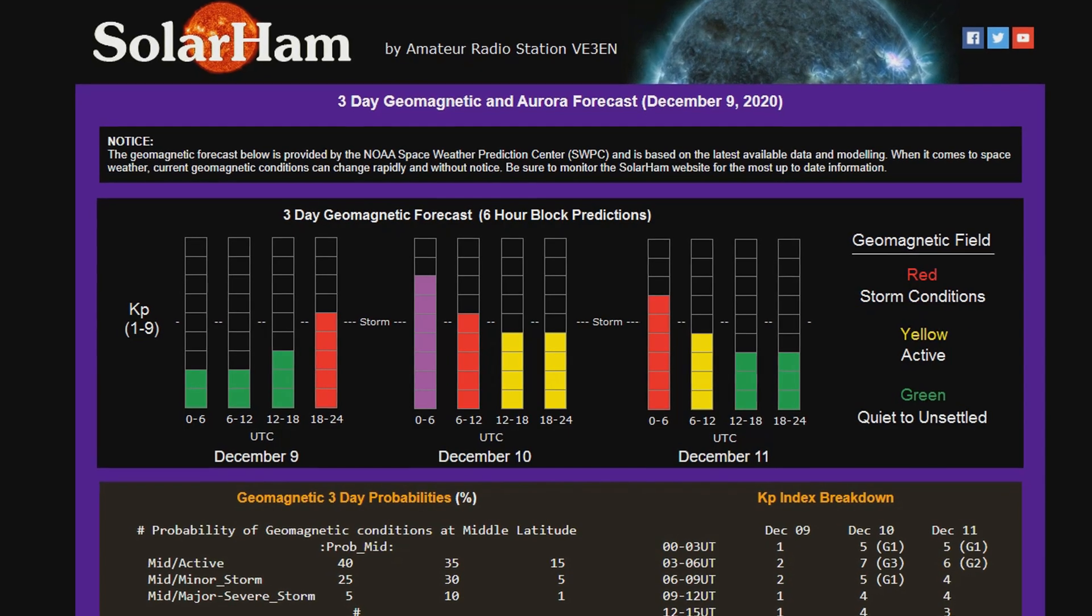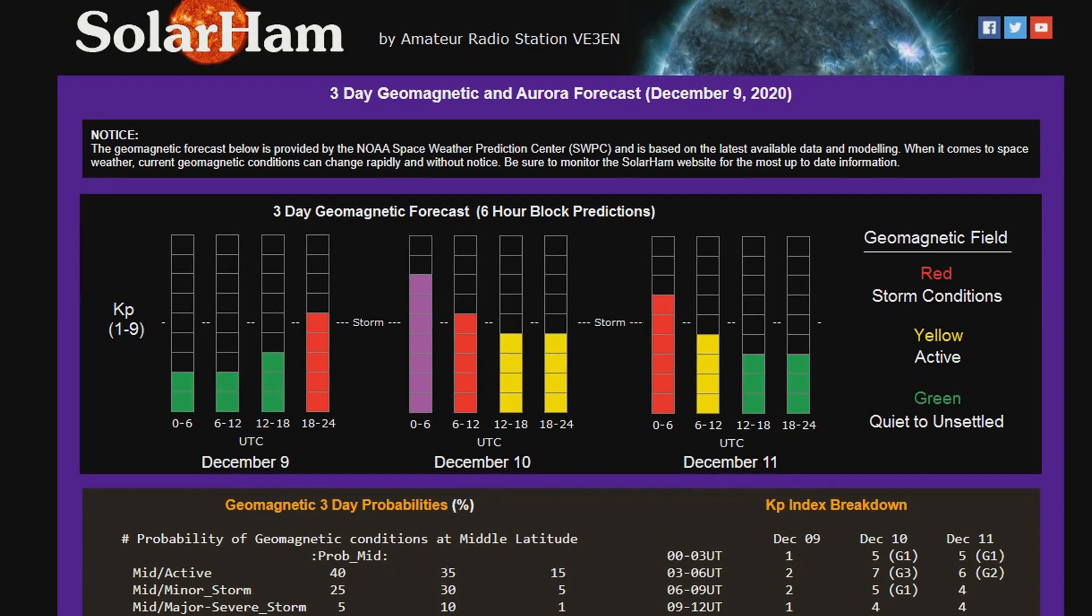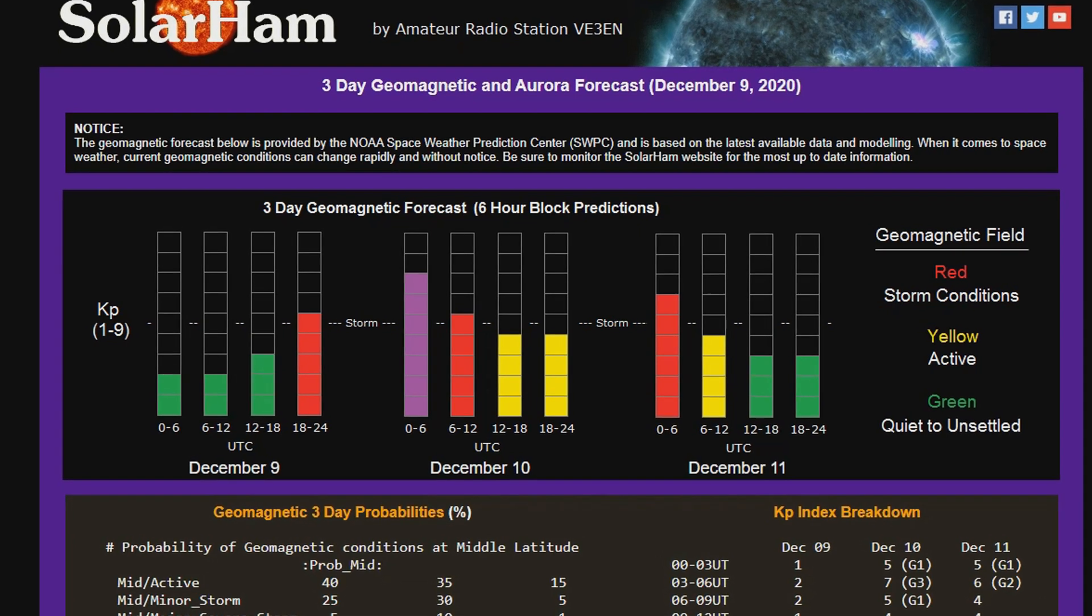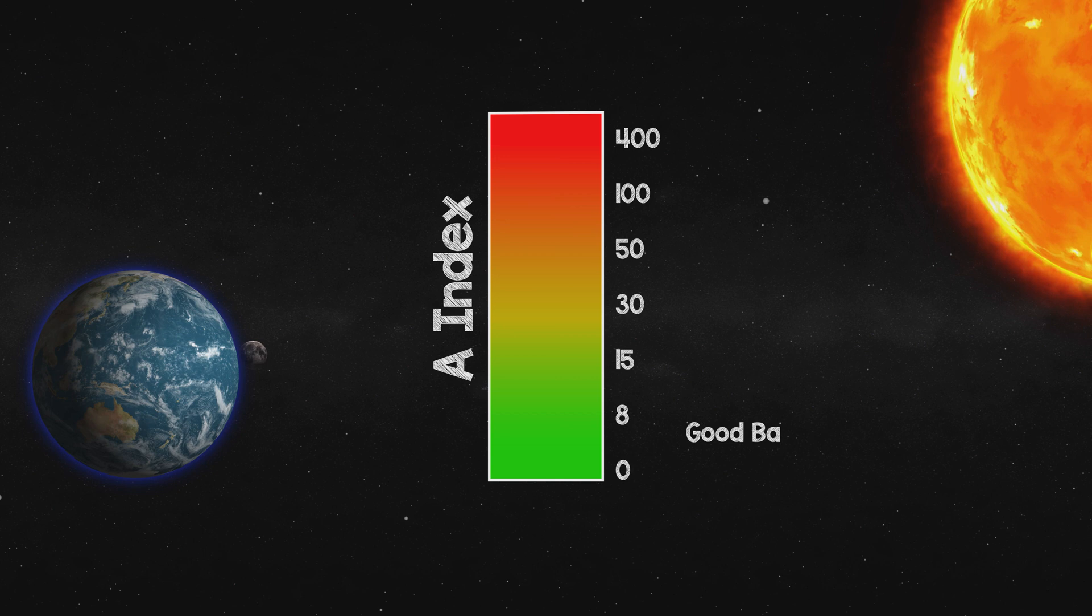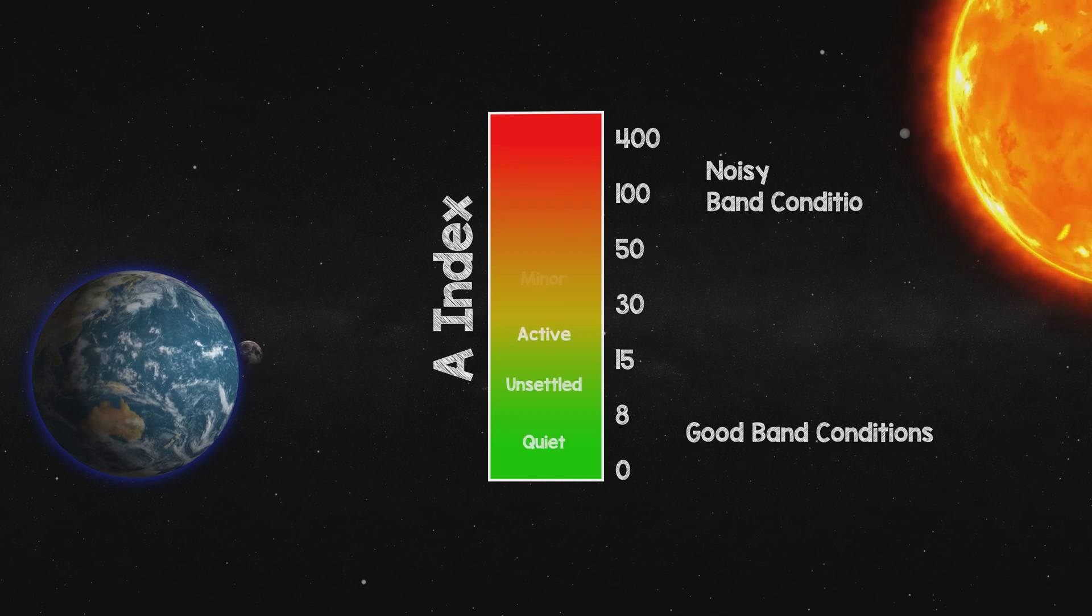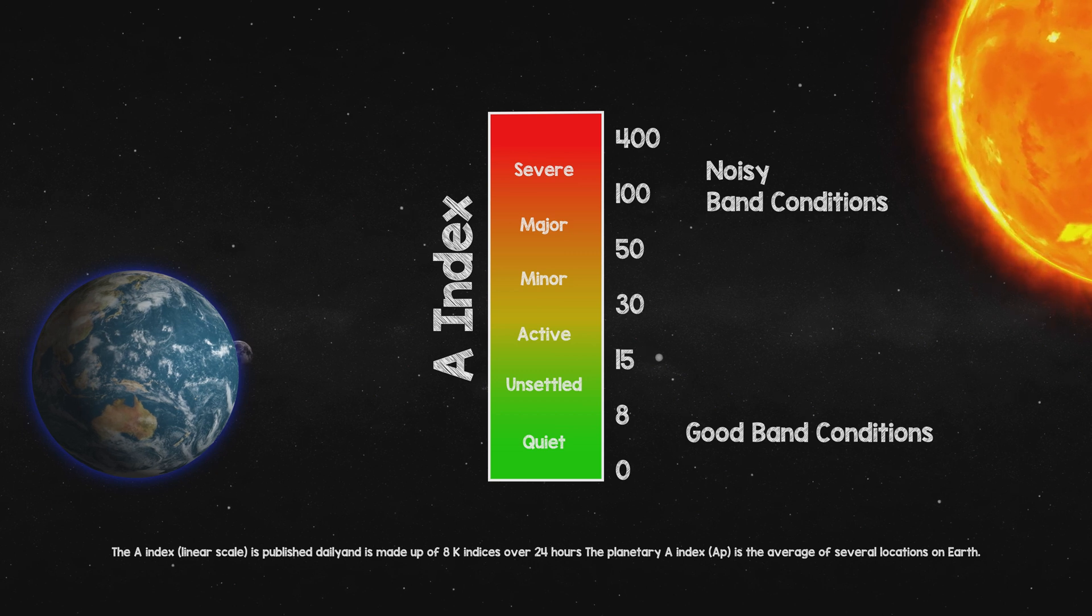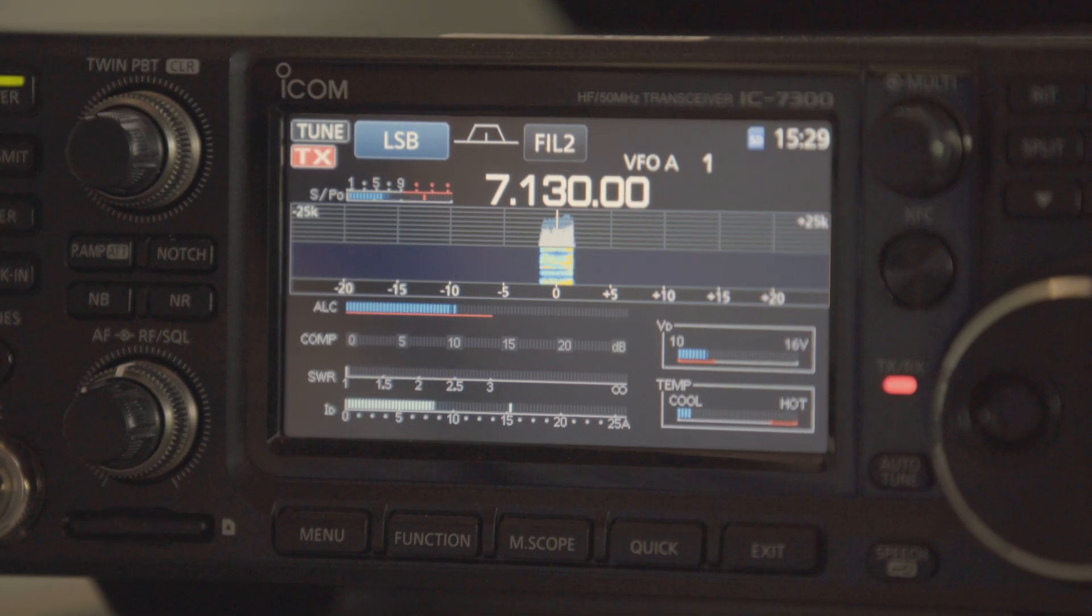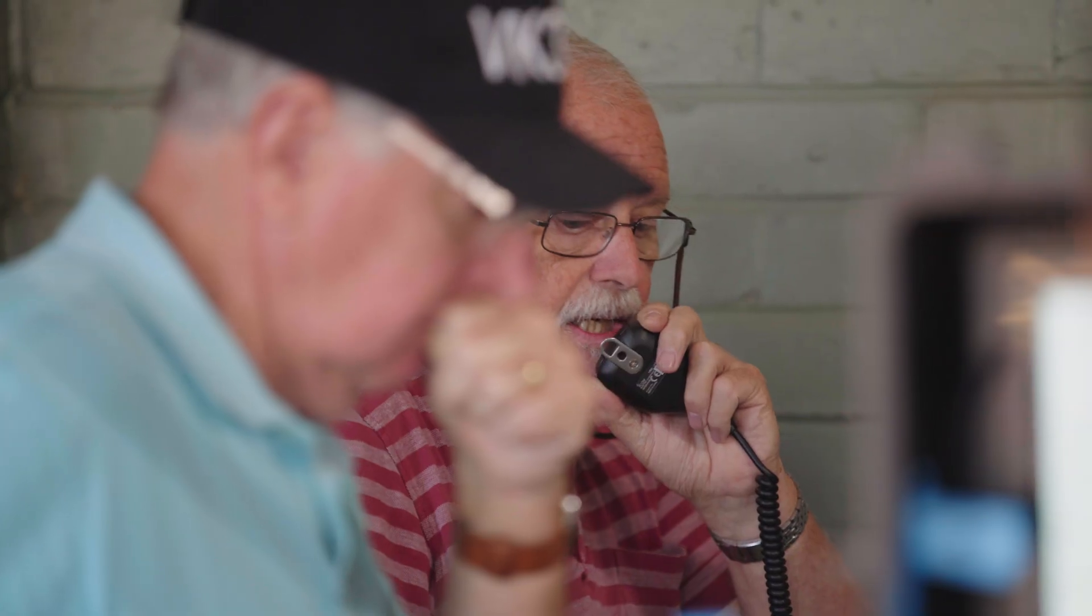The K-index is a quasi-logarithmic number and as such cannot be averaged to give a long-term view of the state of the Earth's magnetic field. So the A-index was created, which gives a daily average. During very severe geomagnetic storms, the A-index can reach values of up to 200 and very occasionally more. The A-index reading varies from one observatory to the next since magnetic disturbances can be local.